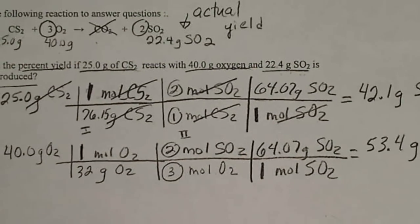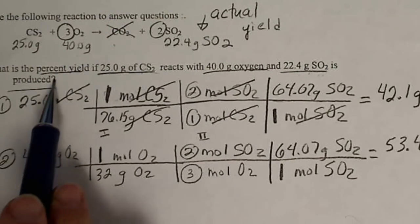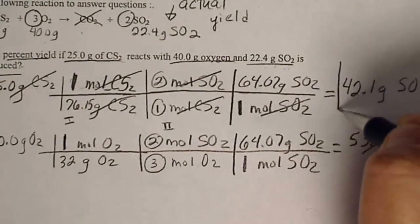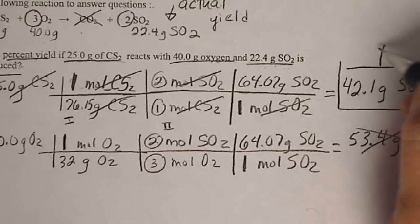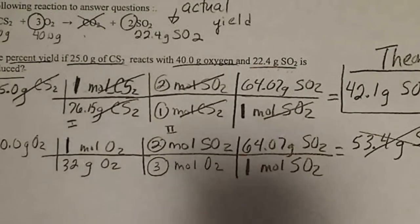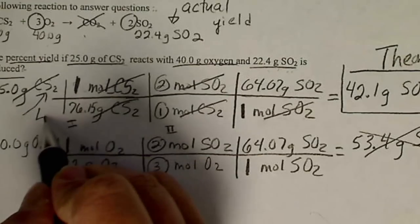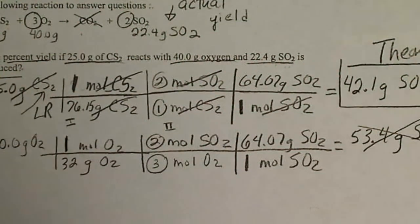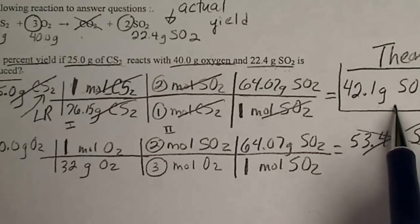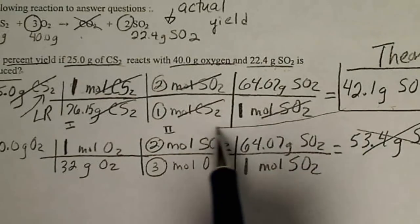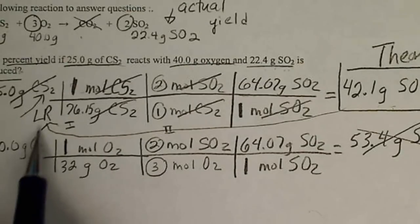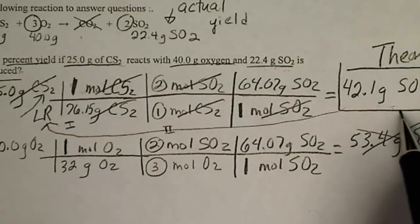In order to calculate the percent yield, which is what the problem asks us for, we need the theoretical yield. So we're going to cross out the big number. This smallest value is the theoretical yield. That means that CS2 is the limiting reactant. Anytime we have a theoretical yield, which will be the smallest amount of product we could make, we're going to know that the theoretical yield is determined by the limiting reactant. In other words, the limiting reactant limits how much product we can get.